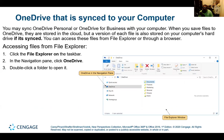You may sync OneDrive Personal or OneDrive for Business with your computer. When you save files to OneDrive, they are stored in the cloud, but a version of each file is also stored on your computer's hard drive. If it's synced, you can access these files from File Explorer or through the browser. To access files from File Explorer, click File Explorer on the taskbar. In the navigation pane, click OneDrive and then double-click on the folder to open it.